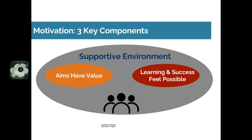That third element is at the top not because it's third, but because it's all-encompassing — though it's often the third thing people think about. It's a supportive environment: that their learning matters, that they matter as learners to the teacher and to each other. So, three key elements for motivation: the aims — the course, the assignments — need to have value for students; learning and success need to feel possible; and students need to see evidence and believe they can grow in their learning, which is part of that supportive environment.